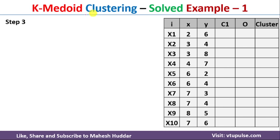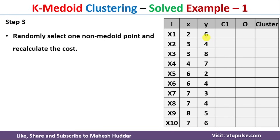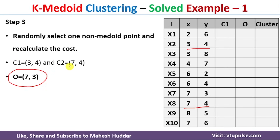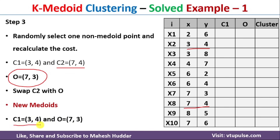In the third step of the K-Medoids algorithm, we select one data point other than the current two medoids (3,4) and (7,4) to potentially replace one of them. We randomly select (7,3) as the new candidate medoid O. We then replace C2=(7,4) with O=(7,3). So the new medoids become C1=(3,4) and O=(7,3).